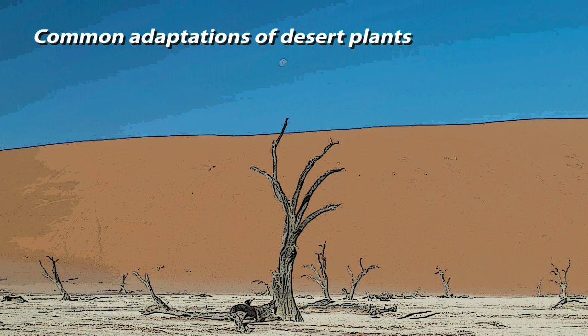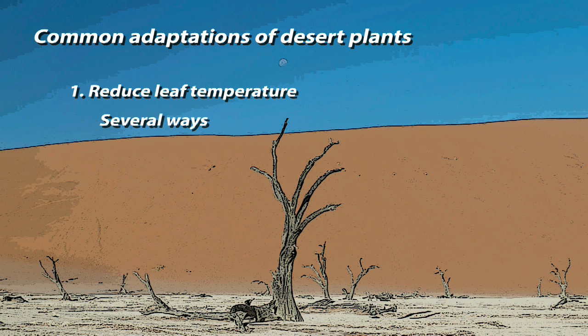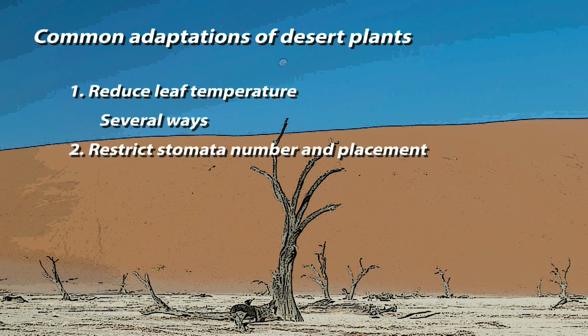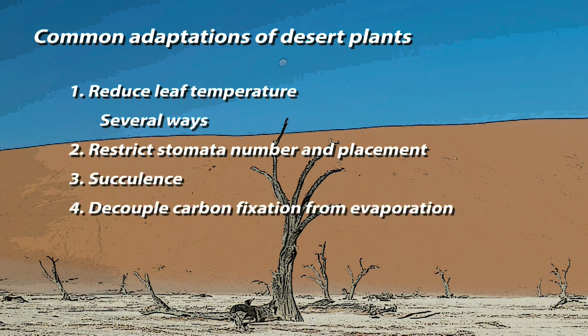These are reductions in leaf temperature, which can come about in several ways; limiting transpiration by reducing the number and placement of stomata; succulents; and decoupling carbon fixation from evaporation. Here we'll consider the first three, and save carbon fixation for another video.